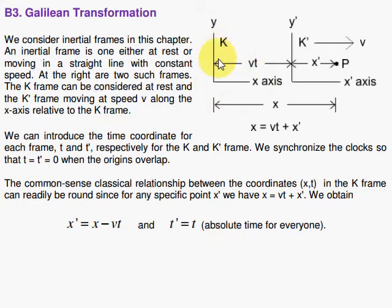In other words, the clock in the laboratory frame and the clock in the moving frame—those clocks read the same time when the origins overlap: t prime equals t equals zero. Then we look at the point P and ask ourselves the question, what do you get for x and x prime and how are they related?